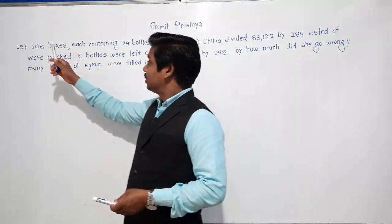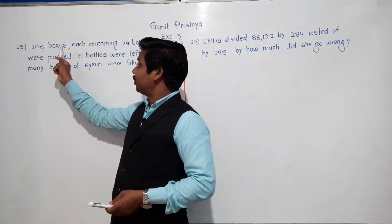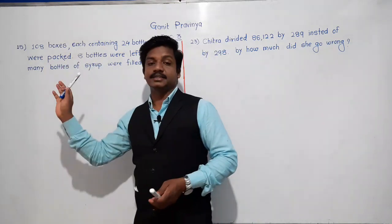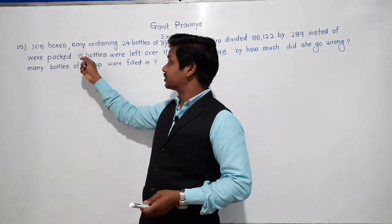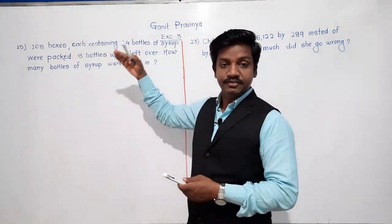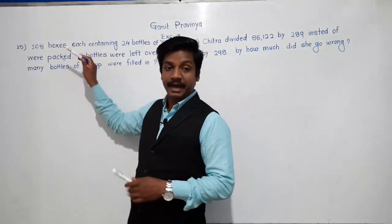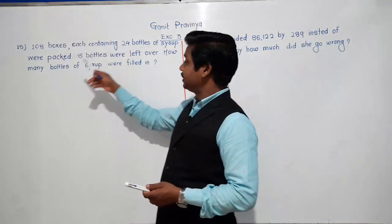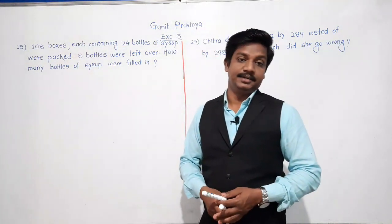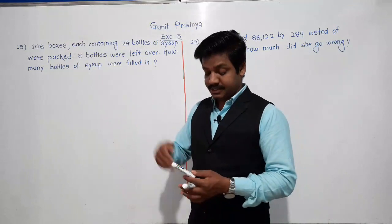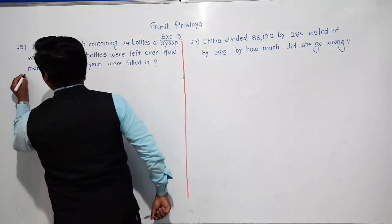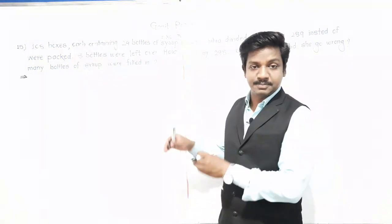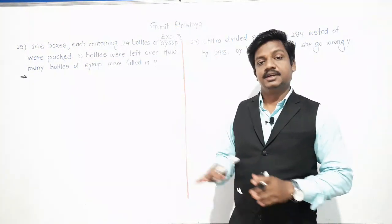The question is: 108 boxes, each containing 24 bottles of syrup, were packed. 8 bottles were left over. How many bottles of syrup were filled? In this example, what we have to do first is form an expression, and then we have to simplify and solve it to find the number of bottles.